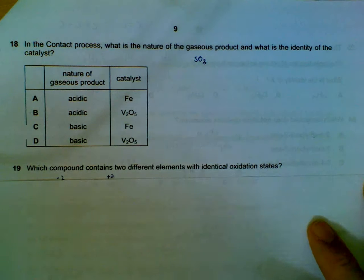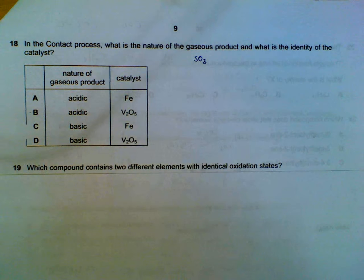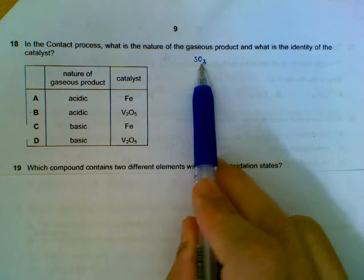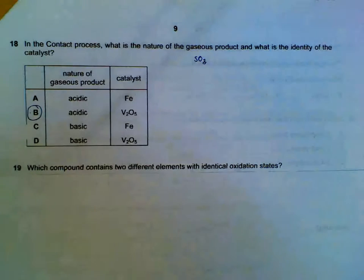This number 18 is a recall question. In the contact process, we have a gaseous product. The product is sulfur trioxide. This will be acidic. And the catalyst used will be vanadium 5 oxide. So it's more of recall than anything.